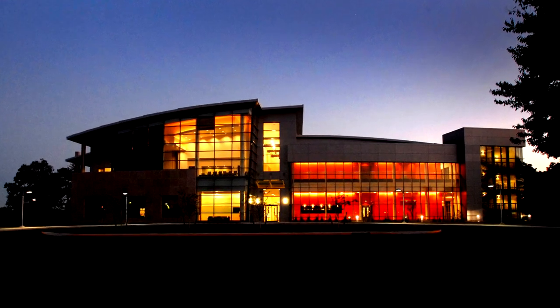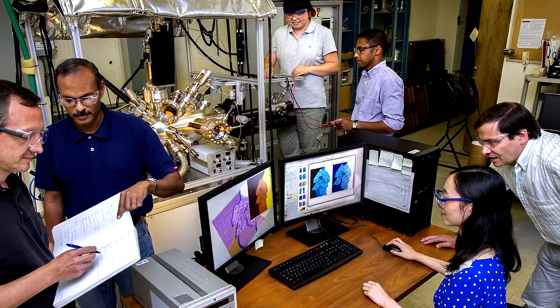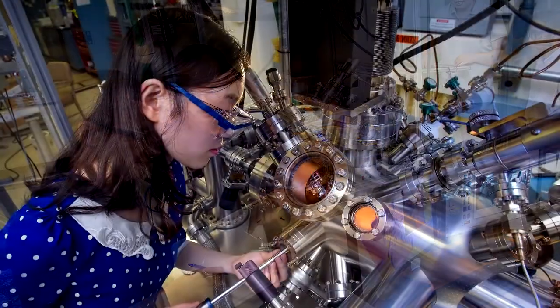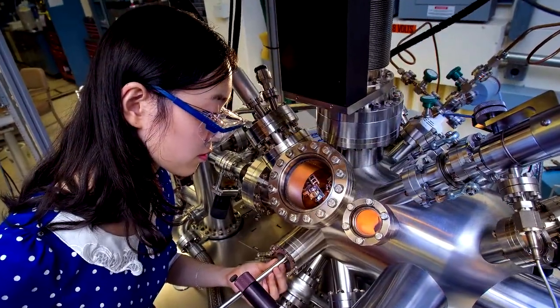At Brookhaven Lab's Center for Functional Nanomaterials, scientists in the Interface Science and Catalysis Group seek to understand, on a microscopic level, how substances called catalysts speed up chemical reactions.